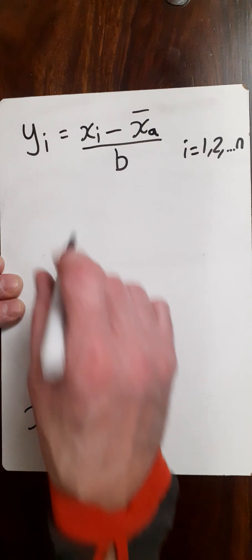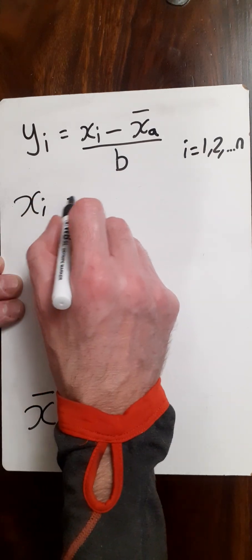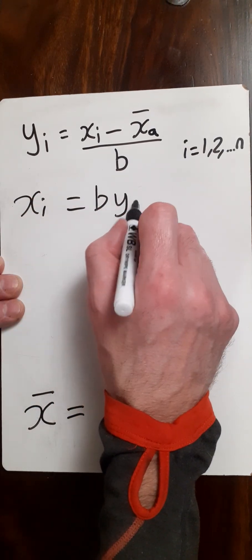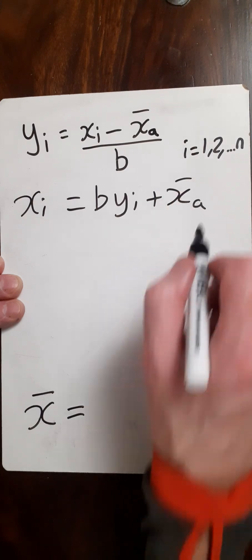So we need to isolate this xi first. So we'll have xi equals b times yi plus the assumed mean.